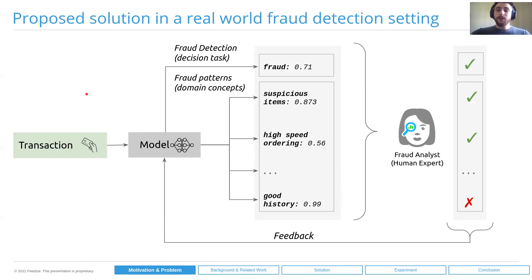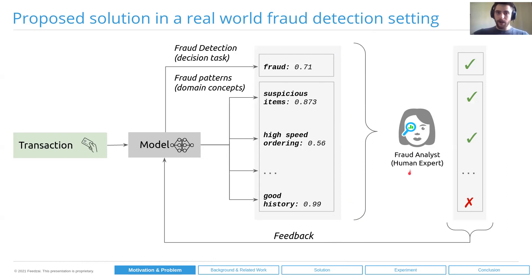Our solution in the real-world fraud detection system works as follows. A new transaction arrives to the model, and then the model produces two different things: the first is the decision task — fraud detection — producing a score, and also associated fraud patterns as the main concepts, such as suspicious items, high-speed ordering, and others. All those patterns also have associated scores. This information, together with the transaction details, is shown to the fraud analyst, who can provide feedback about different concepts and about the decision the model makes. We collect all this feedback in order to continuously improve the predictive power and explainability of the model.